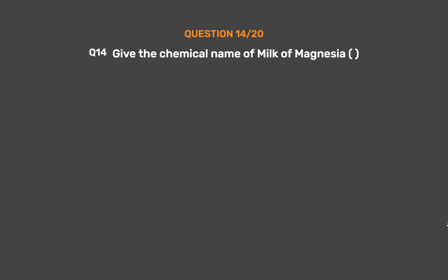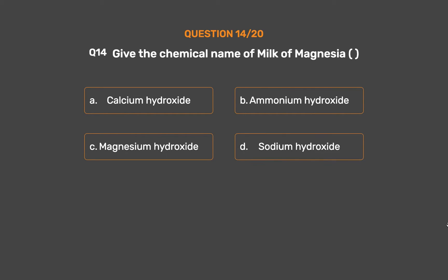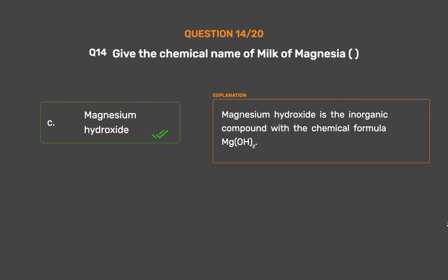Question number 14. Give the chemical name of milk of magnesia. Option A: Calcium hydroxide. Option B: Ammonium hydroxide. Option C: Magnesium hydroxide. The correct answer is Magnesium hydroxide, the inorganic compound with the chemical formula MgO2.